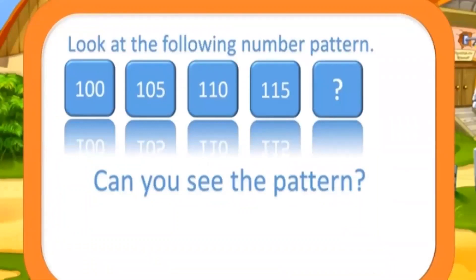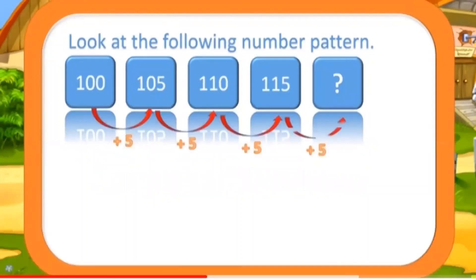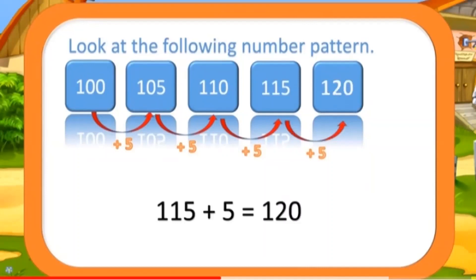First example: look at the number pattern 100, 105, 110, 115. Can you see the pattern? In every number there is a difference of 5 — 100 plus 5 is 105, 105 plus 5 is 110, 110 plus 5 is 115 — so the next number will be 120. This is how you do number patterns.